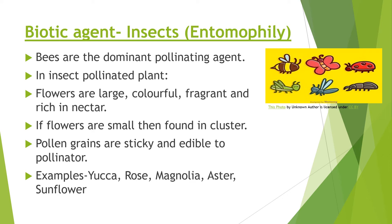In the insects, bees are the dominating pollinating agent. The features in insect-pollinated flowers are: flowers are large, they are brightly colored, they have fragrance, and they are rich in nectar. If the flowers are small then they are found in clusters. Their pollen grains are sticky and edible to the pollinators.